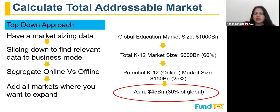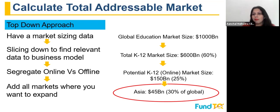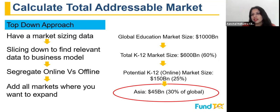Let's take an example. The global education market size is 1,000 billion dollars today, and your business model caters to the K-12 market, which is 60% of the total — so that is a 600 billion dollar market. The potential K-12 online market is 150 billion, which is 25% of the total K-12 market; the remaining has no internet penetration. If your market is only Asia, and Asia constitutes 30% of the global market, that makes it 45 billion dollars — this is the TAM calculated from the top-down approach.